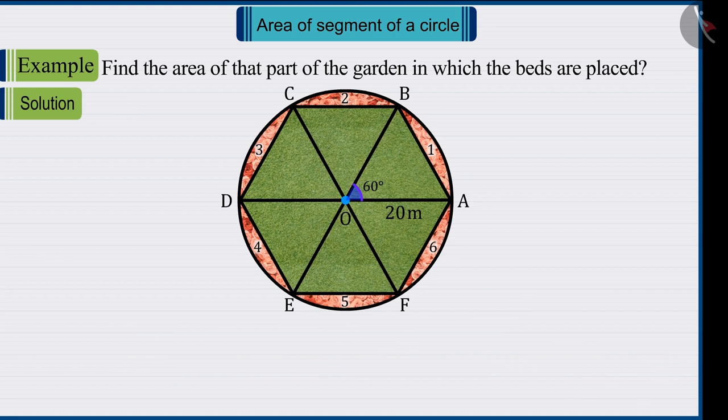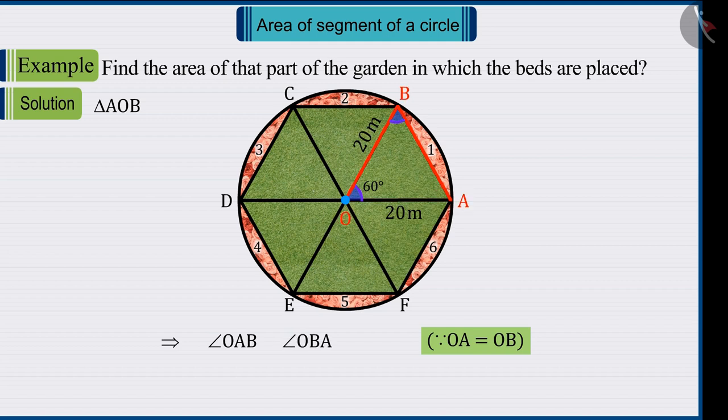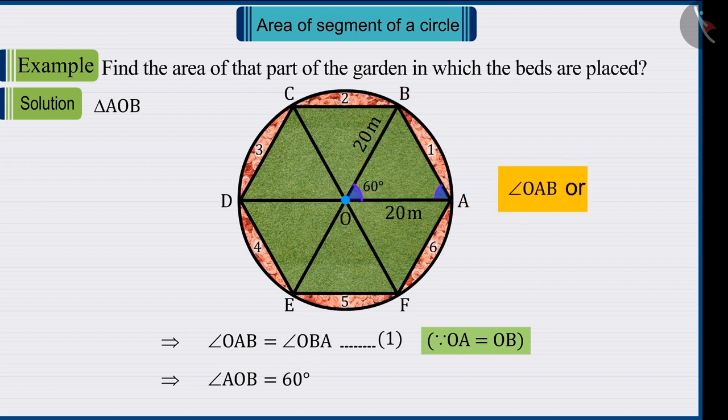Let's now talk about triangle AOB. Here we can see that OA is equal to OB, so the angle OAB and angle OBA will be equal. But can you tell what will be the value of angle OAB or OBA?